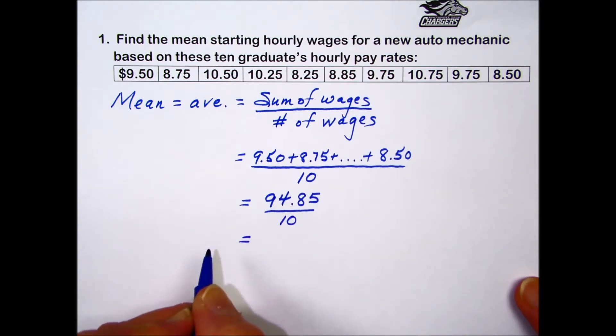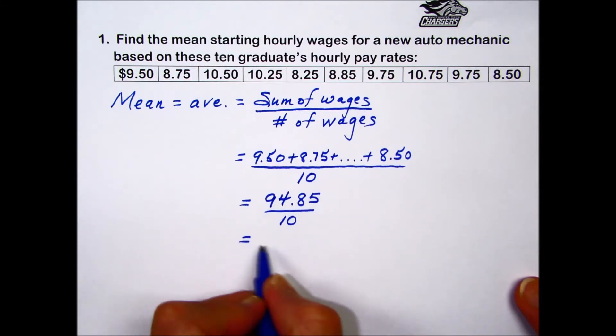If you do the division then, $94.85 divided by 10, it appears the mean, or average hourly wage, is $9.485.